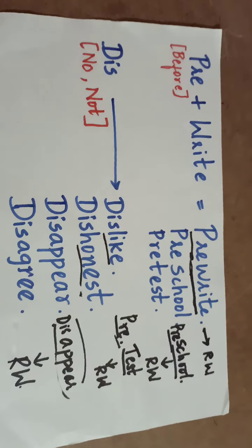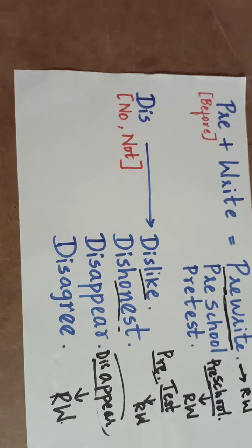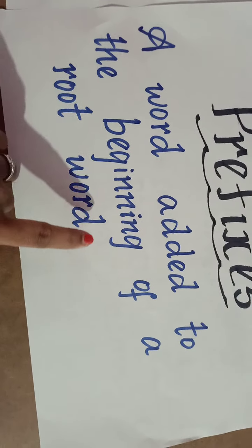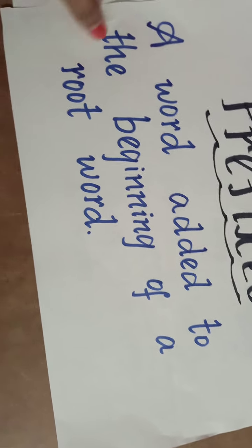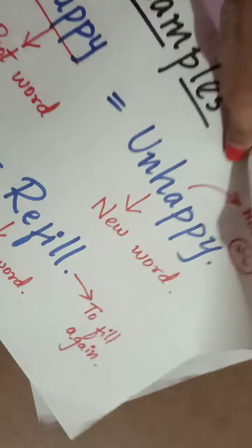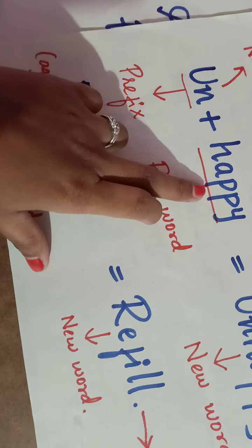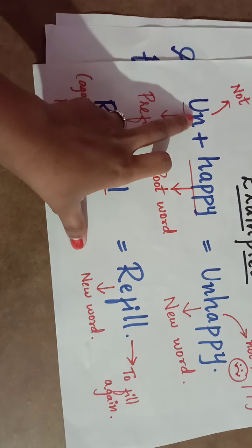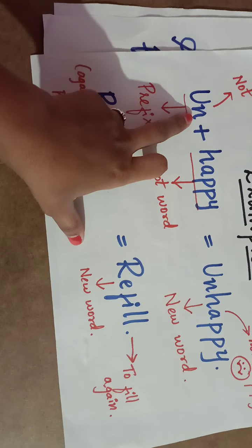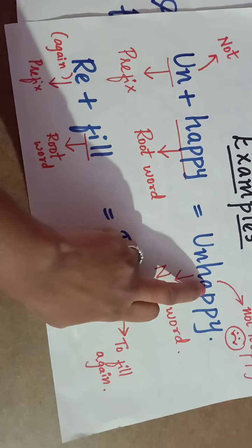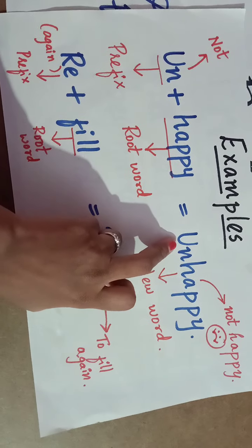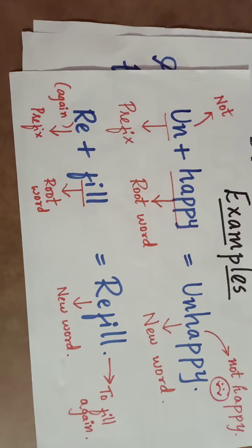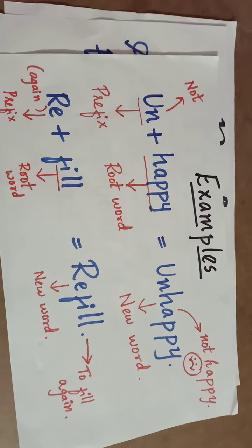So what is a prefix? A prefix is a word added to the beginning of a root word. For example, 'happy' is your root word, 'un' is your prefix, and the new word is 'unhappy'. That is all about today's class — I hope you understood.